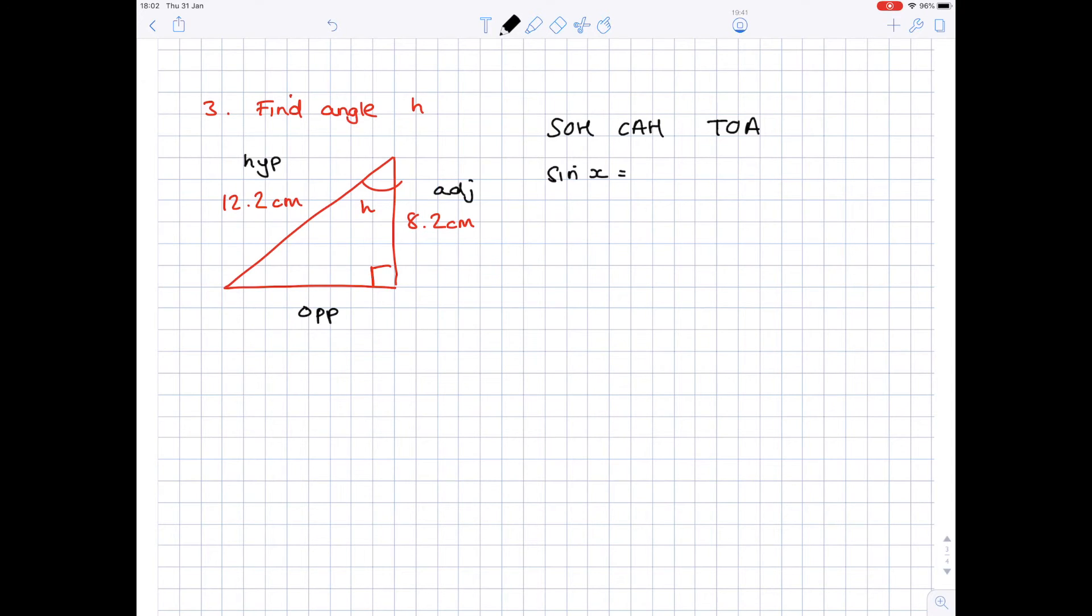Sine x equals O over H, cos x equals A over H, tan x equals O over A. So what do we have here? Well we have an adjacent and we have a hypotenuse, so A and H, which means cos x is the one we're after here.